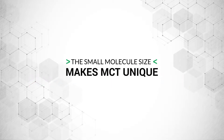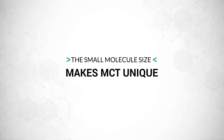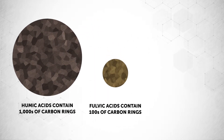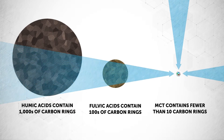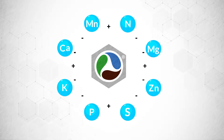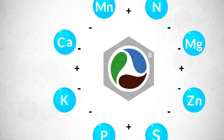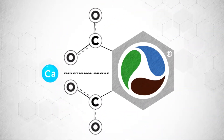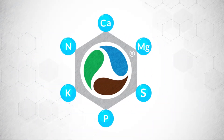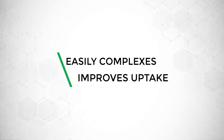So what makes MCT so unique? Well, it is the molecule size that makes the difference. Humic acids are very complex and contain thousands of carbon rings. Fulvic acids contain hundreds of carbon rings. MCT contains fewer than 10 carbon rings. Functional groups allow MCT to complex with positive and negative charged nutrients, making MCT the perfect nutrient carrier.